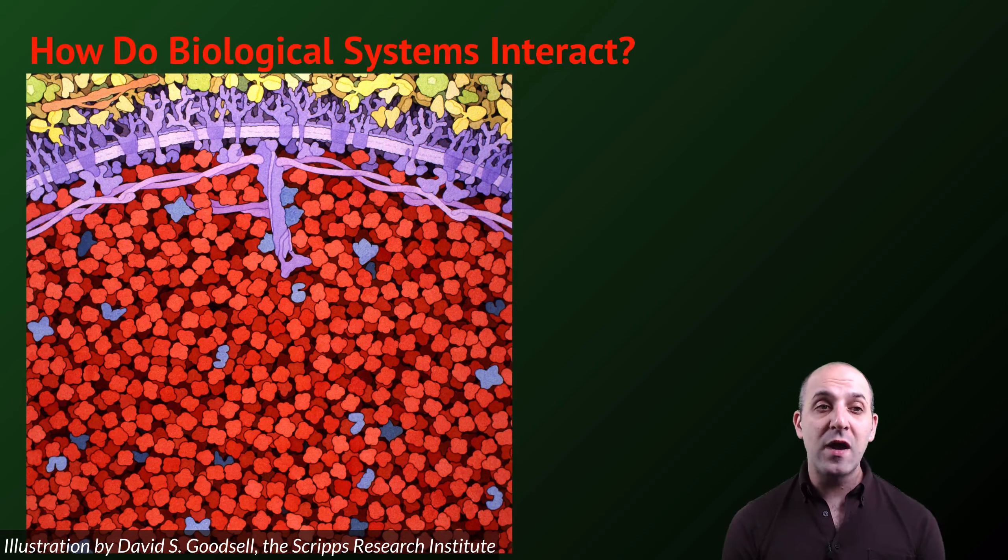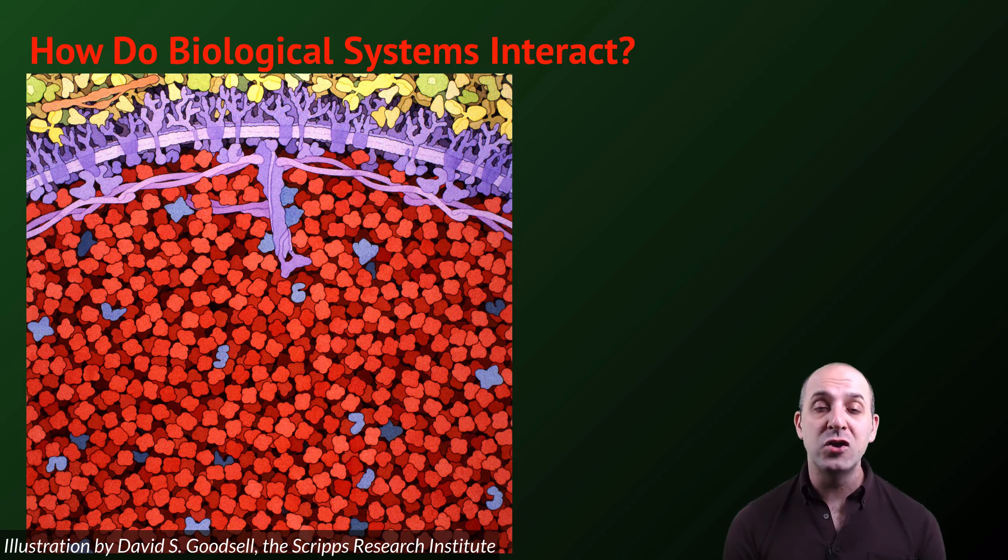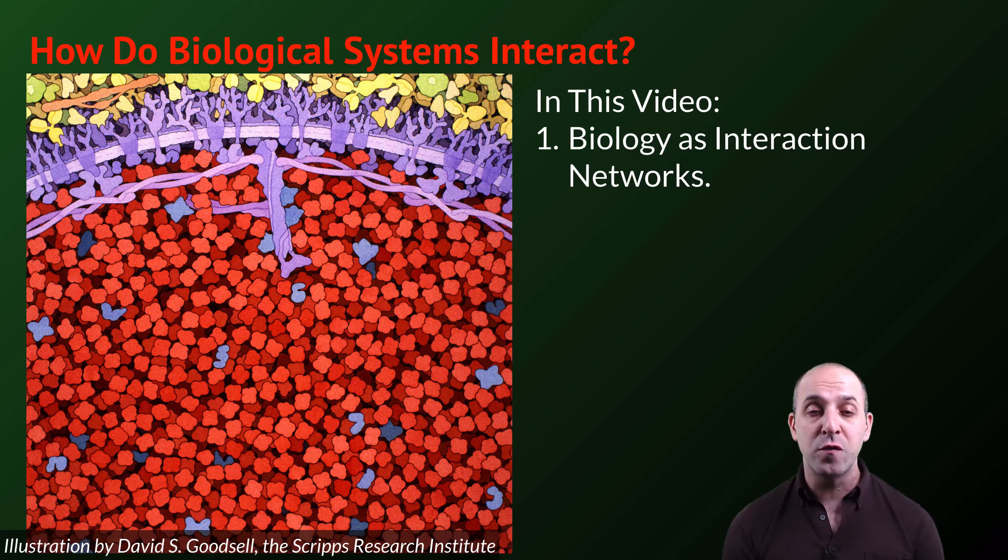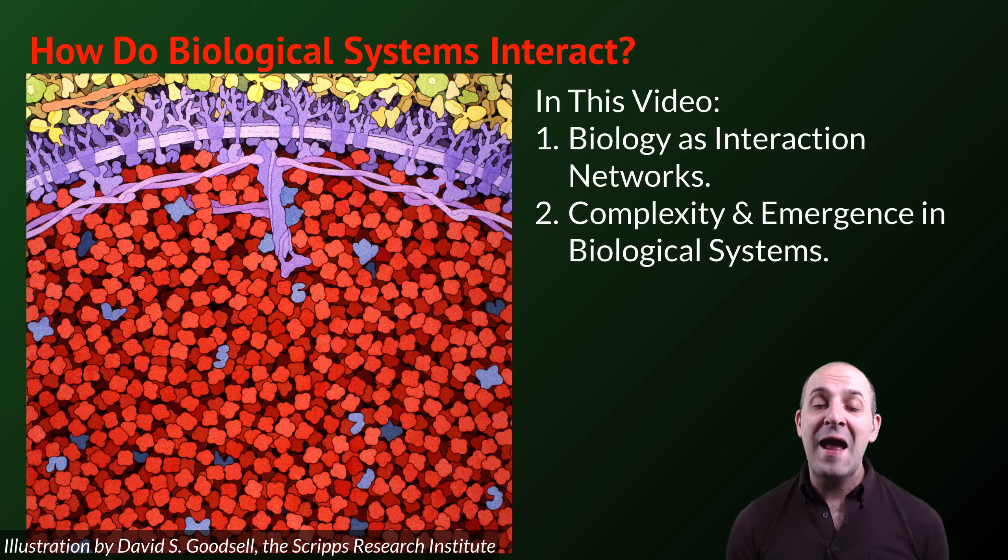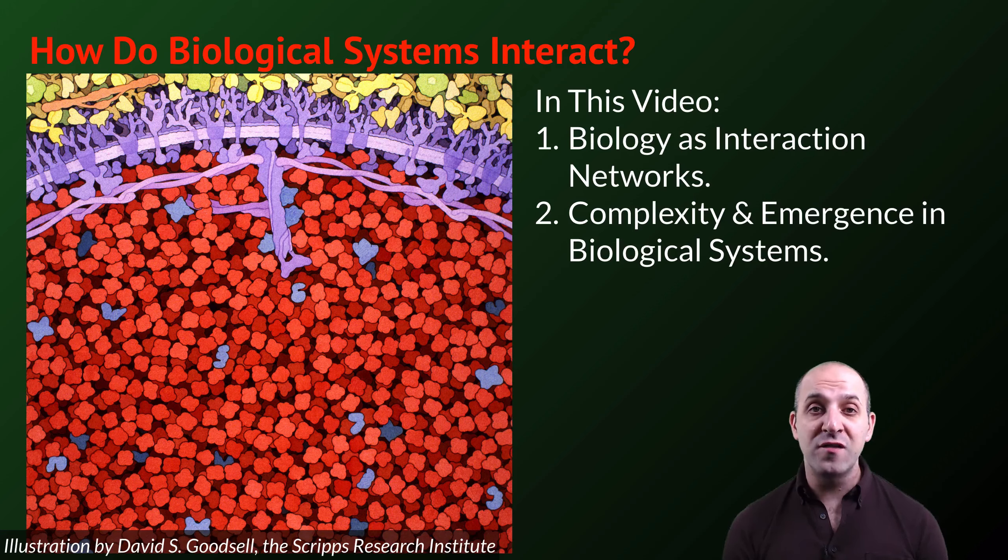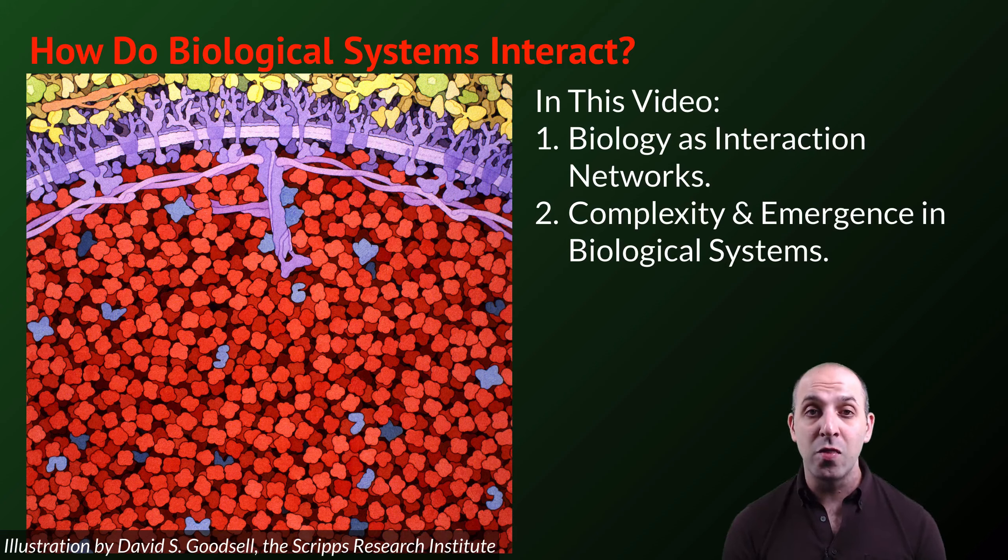The question that we're going to answer in this video is, how do biological systems interact? In this video, we're going to talk about a different way of thinking about biology as an interaction network, the various patterns of interactions that emerge from interactions among the components in the system. And then we're going to talk about how these interactions lead to phenomena that we've seen before, the phenomena of complexity and emergent properties in biological systems. This video is going to take examples from all over biology that span various different levels of organization in order to get at these larger points.